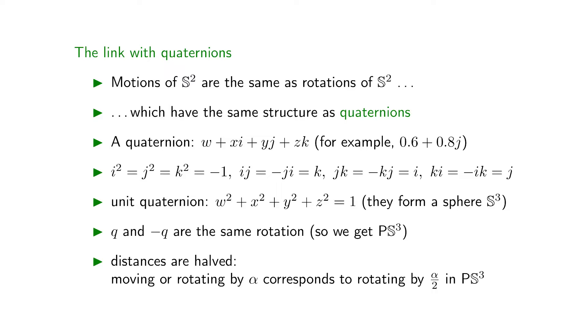A quaternion is a kind of a four-dimensional number. The quaternions that correspond to rotations are the unit quaternions that form a three-dimensional sphere. However, q and minus q represent the same rotation.